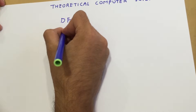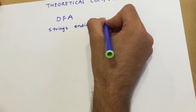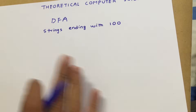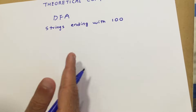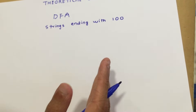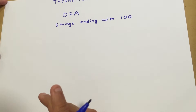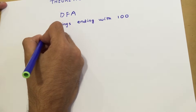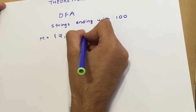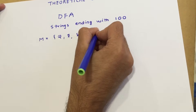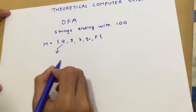For example, strings ending with '100'. This means the DFA should accept all those strings that end with '100' — before this, anything is fine, but if it ends with '100' the DFA should accept it. I am going to teach a new and very effective method. First, I will make the mathematical model: Q, sigma, delta, q0, F.